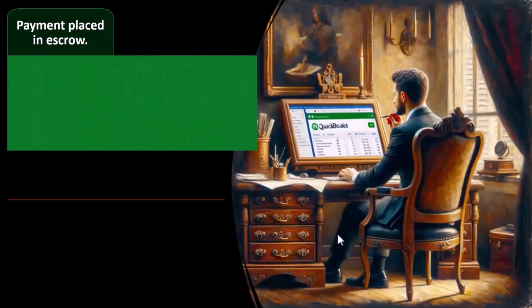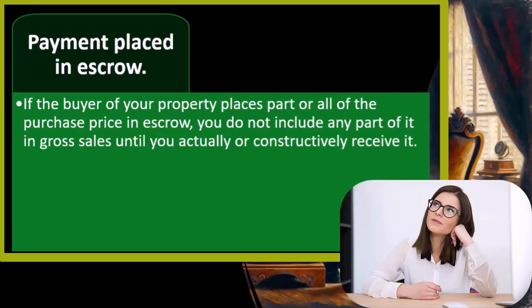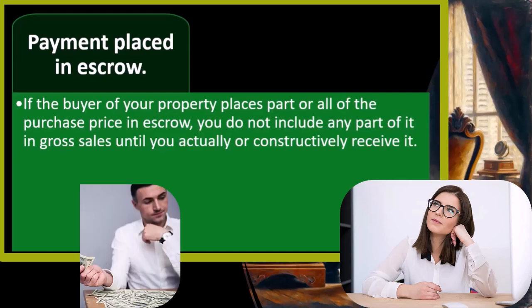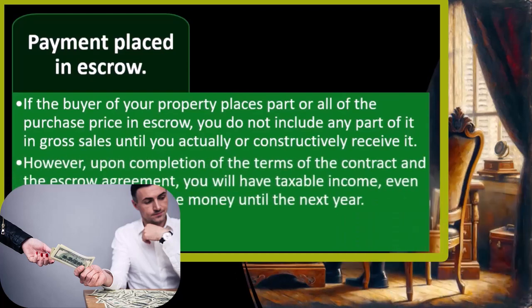Payment placed in escrow: if the buyer of your property places part or all of the purchase price in escrow, you do not include any part of it in gross sales until you actually or constructively receive it. Escrow is most commonly seen in real estate transactions and acts as a holding point until the full business transaction is complete, since many things must happen before a large sale goes through. If funds are in escrow, you don't actually have the money yet — it's in that holding account — so you haven't constructively received it, and income is recorded only when you actually receive it.